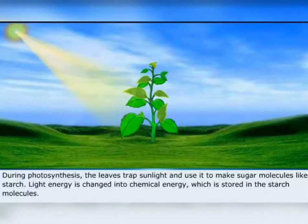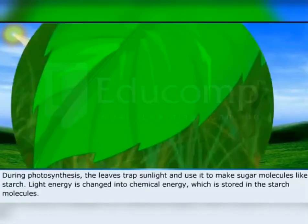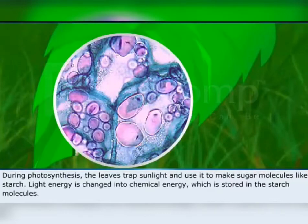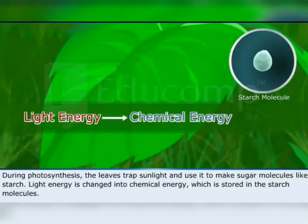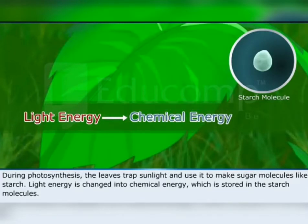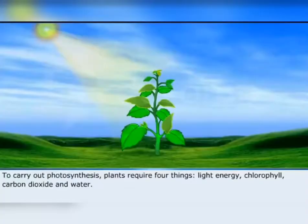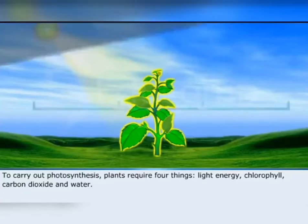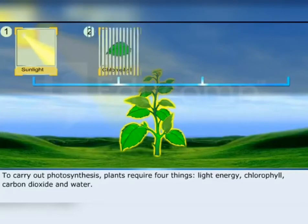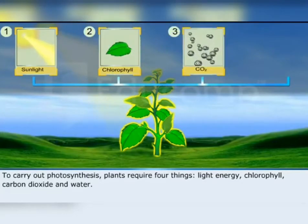During photosynthesis, the leaves trap sunlight and use it to make sugar molecules like starch. Light energy is changed into chemical energy, which is stored in the starch molecules. To carry out photosynthesis, plants require four things: light energy, chlorophyll, carbon dioxide, and water.